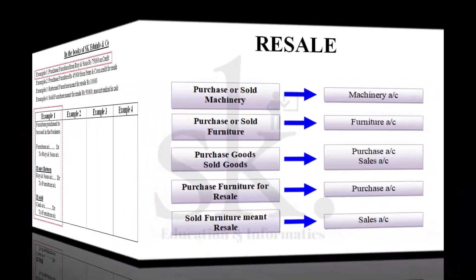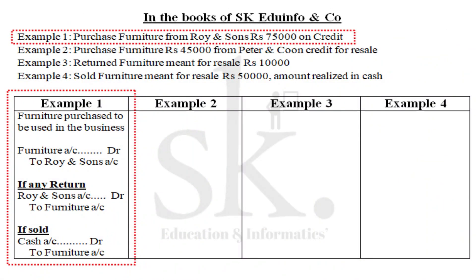Let's understand the concept of resale with more examples in the books of SK Edu Info and Co. Example one: purchase furniture to be used in the business. For instance, furniture purchased from Roy and Sons for Rs. 75,000 on credit, with no mention of resale, means the furniture is used in the business. The journal entry is: Furniture Account Debit to Roy and Sons.